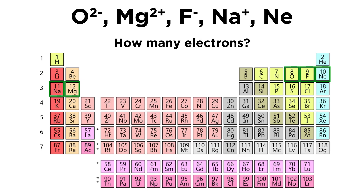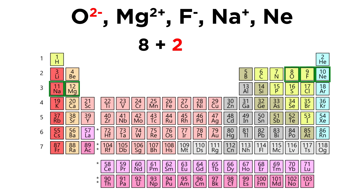With ions, it's very important to know how many electrons are in each species. A neutral oxygen atom has eight electrons — for a neutral atom, the number of electrons equals its atomic number. But O2- has two additional electrons, so eight plus two is 10; O2- has 10 electrons. For Mg2+, a neutral magnesium atom has 12 electrons, but this is a two-plus ion, so it has lost two electrons. Mg2+ also has 10 electrons.